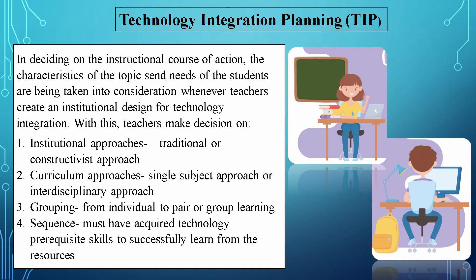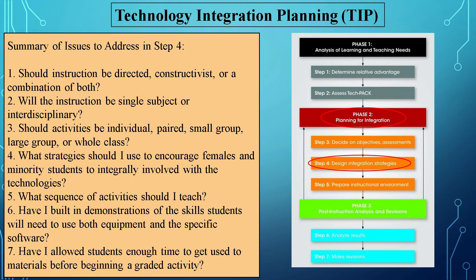2. Curriculum approaches — single subject approach or interdisciplinary approach. 3. Grouping — from individual to pair or group learning. 4. Sequence — students must have acquired technology prerequisite skills to successfully learn from the resources. Summary of issues to address in Step 4: 1. Should instruction be directed, constructivist, or a combination of both? 2. Will the instruction be single subject or interdisciplinary? 3. Should activities be individual, paired, small group, large group, or whole class? 4. What strategies should I use to encourage females and minority students to be integrally involved with the technologies? 5. What sequence of activities should I teach? 6. Have I built in demonstrations of the skills students will need to use both equipment and specific software? 7. Have I allowed students enough time to get used to materials before beginning a graded activity?